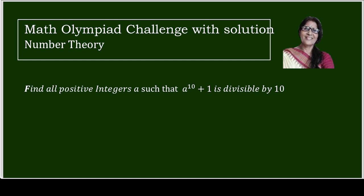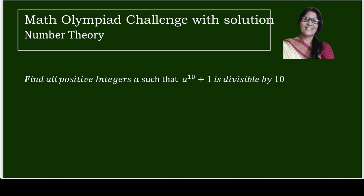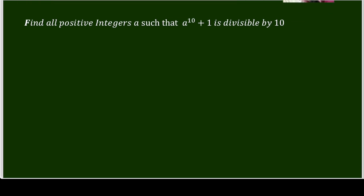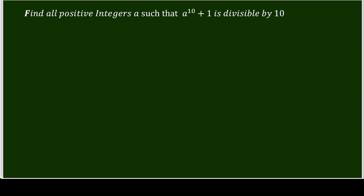On the screen: find all positive integers a such that a to the power 10 plus 1 is divisible by 10. That means we have to find the integers for which a to the power 10 plus 1 is congruent to 0 modulo 10. We have to find those values of a, or we have to solve this congruence.